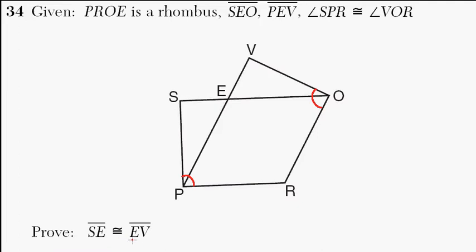We want to prove that SE and EV, those two segments, are indeed congruent. So we want, in the end, that this and this are congruent. That's our desired end. That's what we want. And there's a couple different ways to go about this.